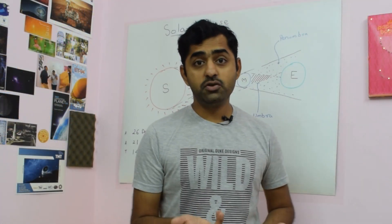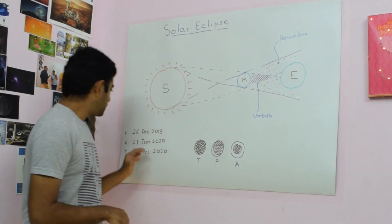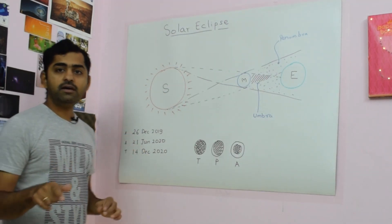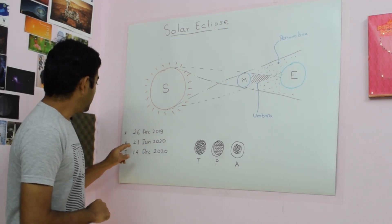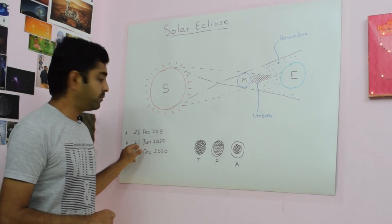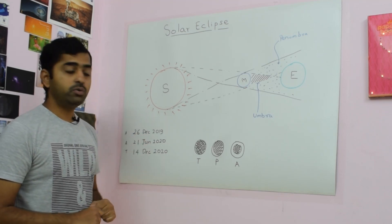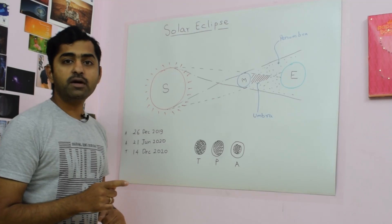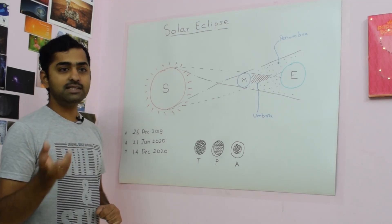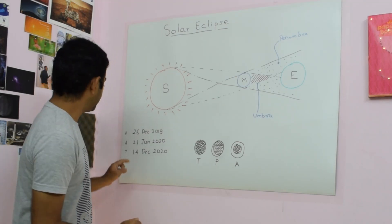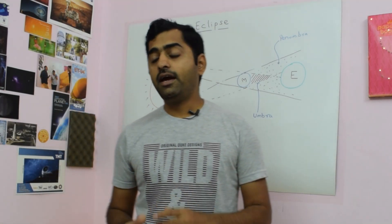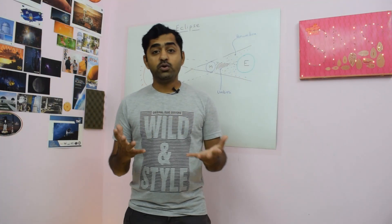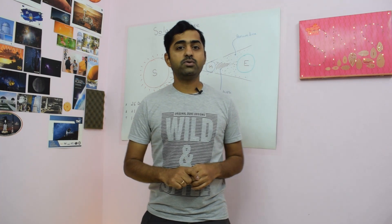Is this the only eclipse you are going to see? No — there are many eclipses coming up. On 26th December, the next solar eclipse will be visible from southern India. The next eclipse after that is on 21st June 2020, visible from the northern part of India. So if you don't get to see this eclipse, do attempt for the next one. There is also a total solar eclipse visible from South America on 14th December 2020. There is no comparison to a total solar eclipse, but an annular solar eclipse is also very interesting.